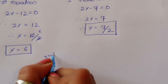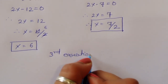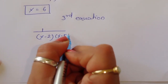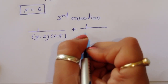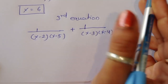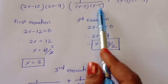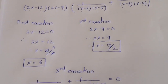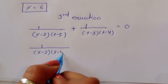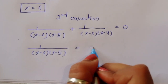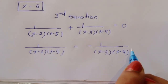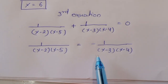For the third equation: 1/[(x minus 2)(x minus 5)] plus 1/[(x minus 3)(x minus 4)] equals 0. We rearrange to get 1/[(x minus 2)(x minus 5)] equals minus 1/[(x minus 3)(x minus 4)].